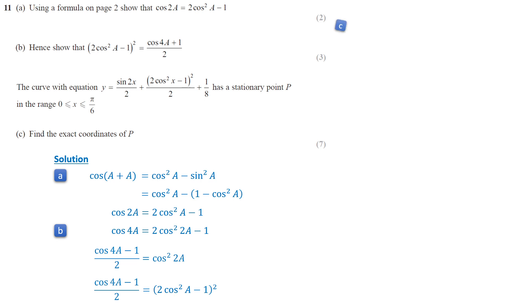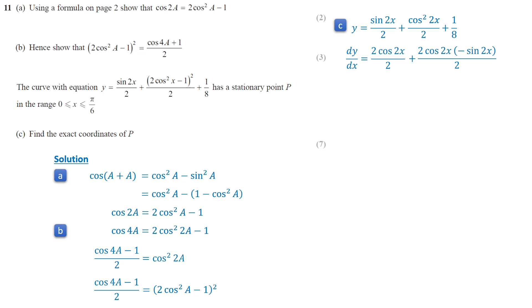For part C, we are given a function. We can substitute (2 cos squared X minus 1) whole squared with cos squared 2X. The expression becomes Y equals sine 2X over 2 plus cos squared 2X over 2 plus 1 over 8. Now we need to differentiate this function with respect to X. The derivative of sine 2X is 2 cos 2X. Using the chain rule, the derivative of cos squared 2X is 2 cos 2X times negative sine 2X, and the derivative of the constant is 0. At the stationary point, dy over dx equals 0. Simplifying, we have cos 2X minus 2 sine 2X cos 2X equals 0.